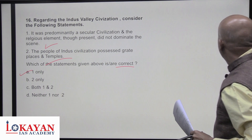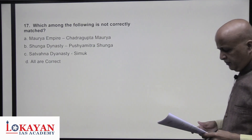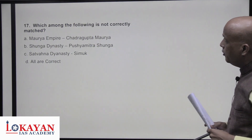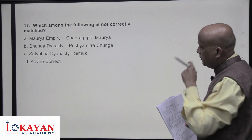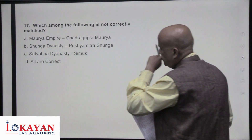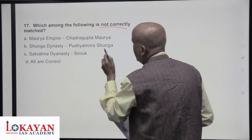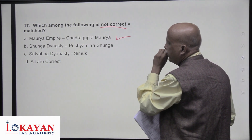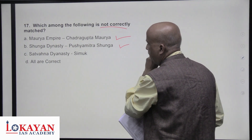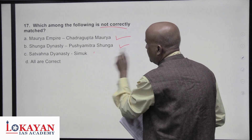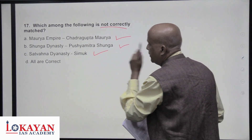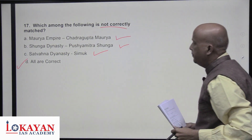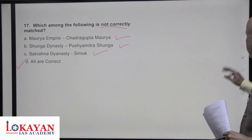Which of the following is not correctly matched? Mauryan empire — founder Chandragupta Maurya: correct. Shunga — Pushyamitra Shunga: correct. Satavahana — Simuka: correct. All are correctly matched, so the answer is D.